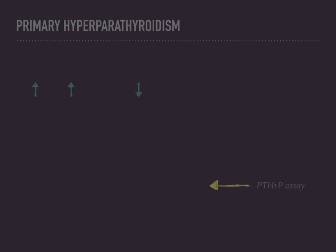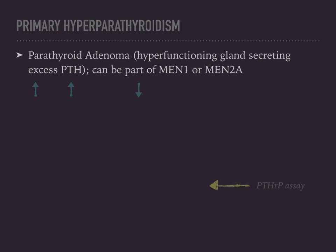When we talk about primary hyperparathyroidism, the most common cause is parathyroid adenoma, which causes excess PTH. Parathyroid adenomas can be part of MEN1 or MEN2A.